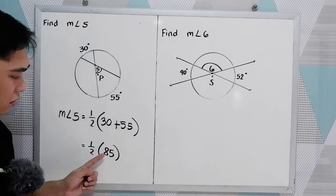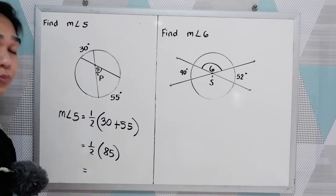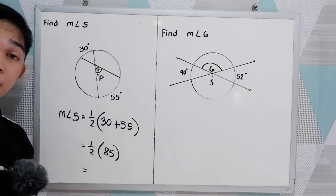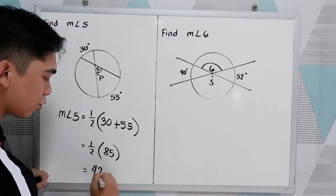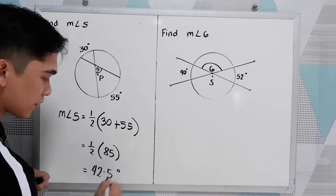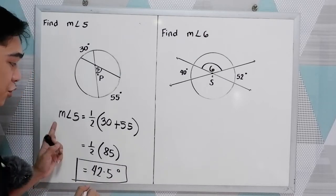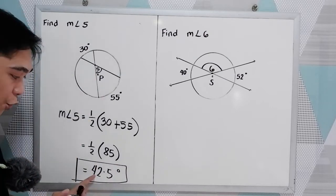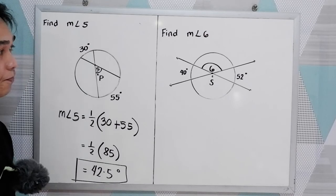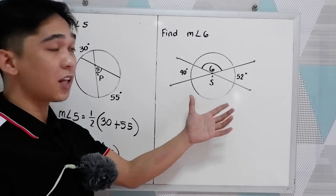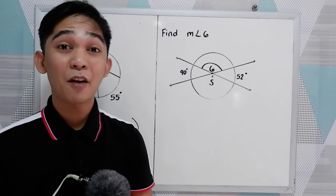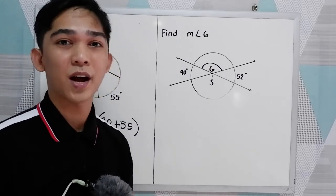Now, 85 divided by 2, that is 42.5 degrees. That would be the measure of angle 5, 42.5 degrees. If you want to try number 6, go ahead, pause the video. Then after answering, resume watching to check your answer.